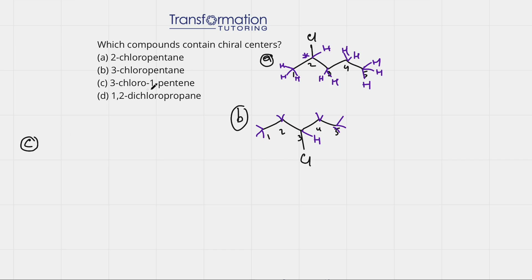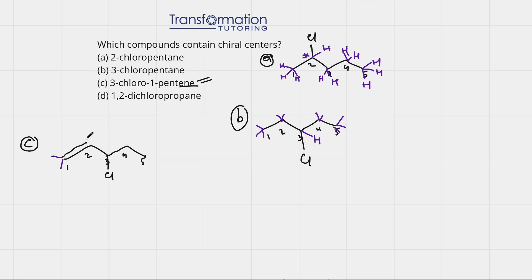Let's go ahead and do C: 3-chloro-1-pentene. 'Ene' means there is a double bond, and 'pent' is five carbons. So I draw five carbons and number them. 1-pentene means on the first carbon there is a double bond, so I'm going to show a double bond here. 3-chloro means there is a chlorine on carbon 3. Looking at each carbon: this one has two bonds so two hydrogens were not shown. Carbons on the double bond will not be chiral centers because they are not connected to four different groups, so we can disregard those two.